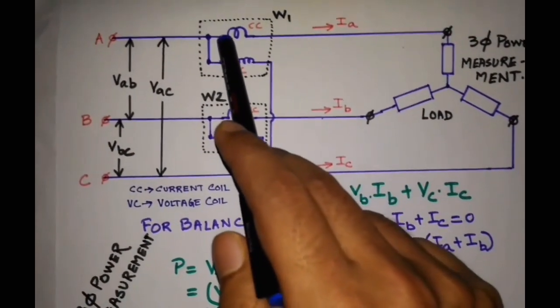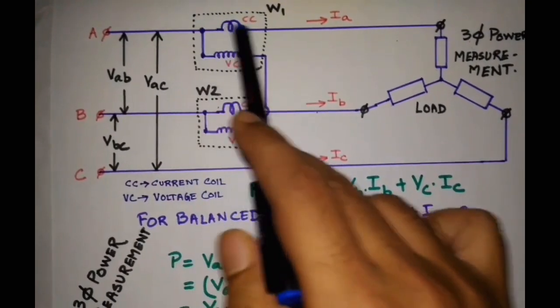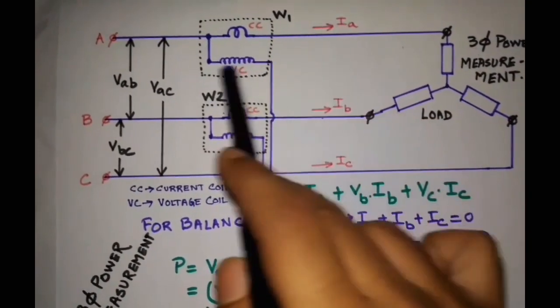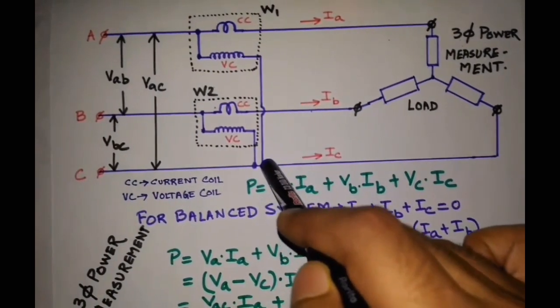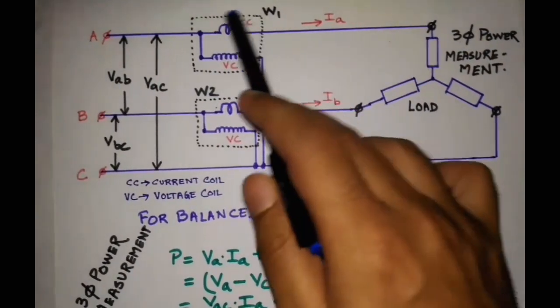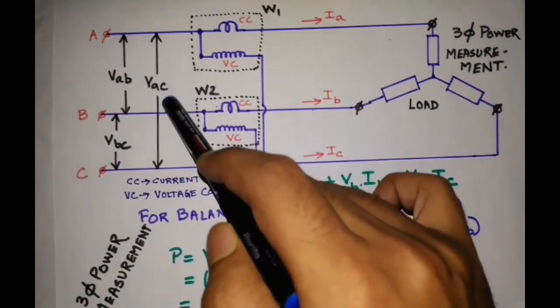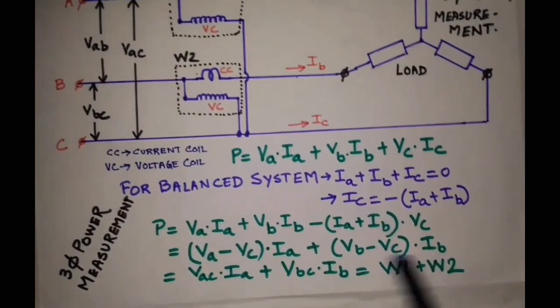Now let us see the wattmeter. The current coil is connected along the A phase, so it will measure Ia, and the voltage coil is connected across terminal A and terminal C, so it will measure voltage AC. So the wattmeter will measure Vac × Ia.